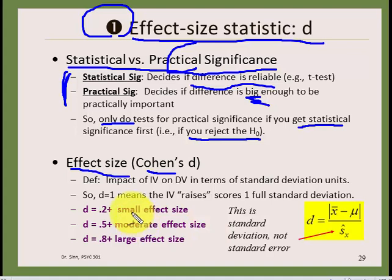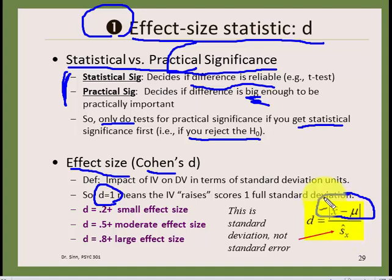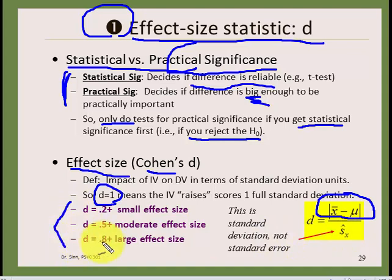If you calculate d equal to one, that means the independent variable raises scores by one full standard deviation. It's simple to calculate: take the difference between x-bar and mu — the difference that comes from a t-test or z-test — take the absolute value of that (dropping any negative), and then divide by the standard deviation. Note this uses standard deviation, not standard error, which would make it a t-test formula.